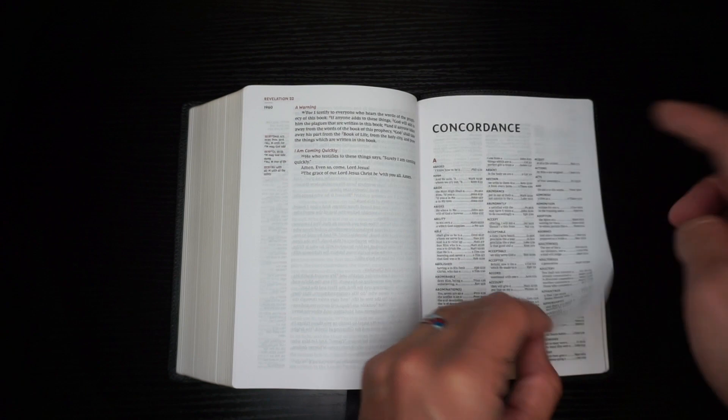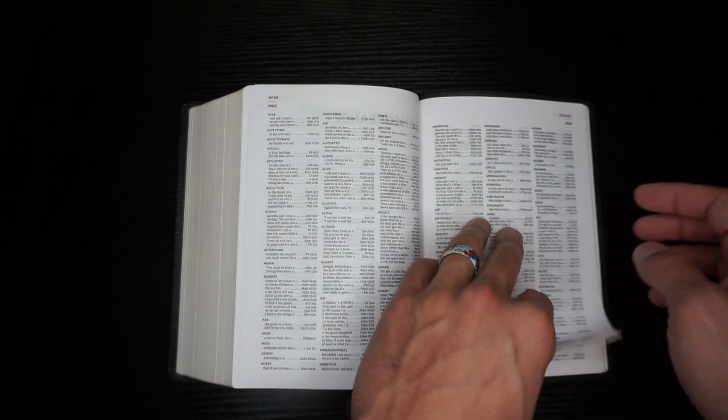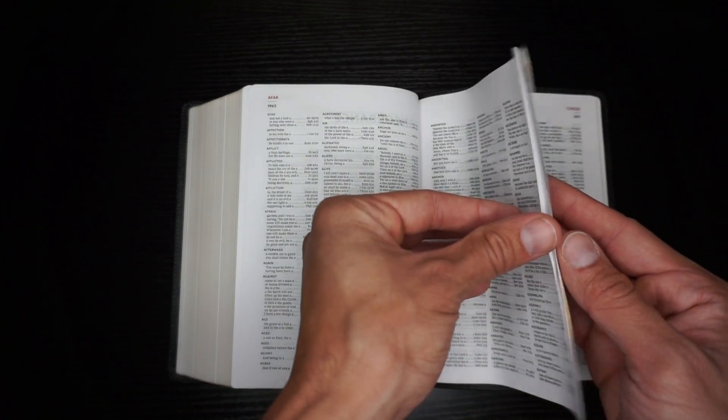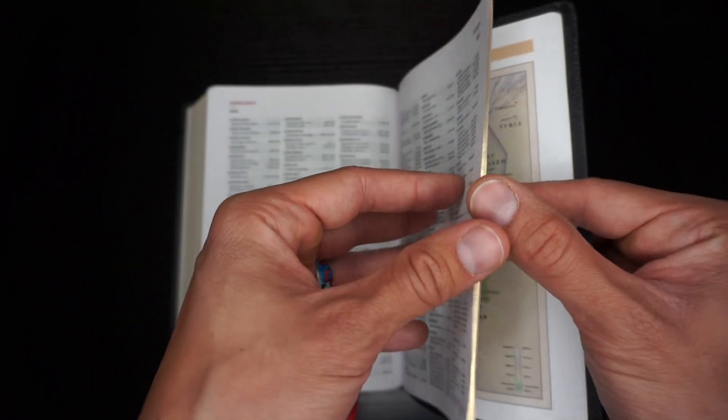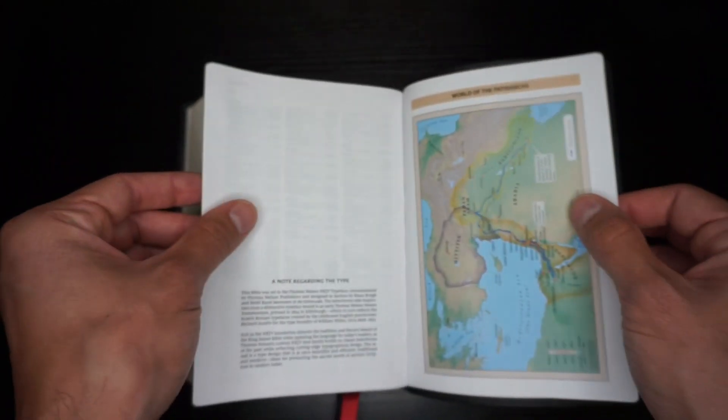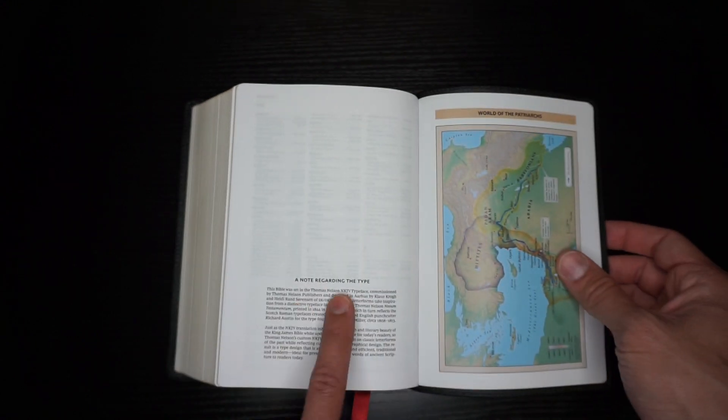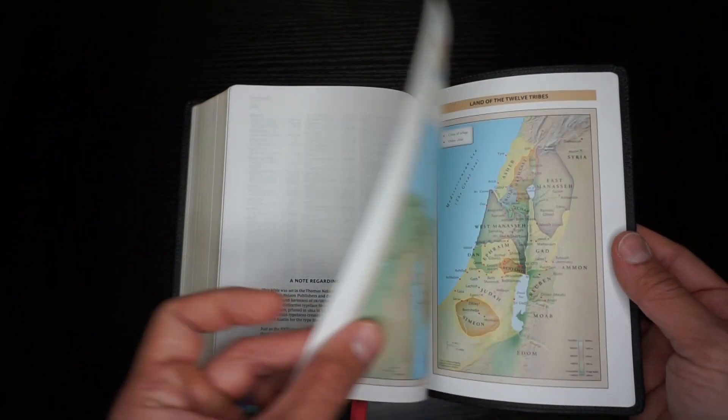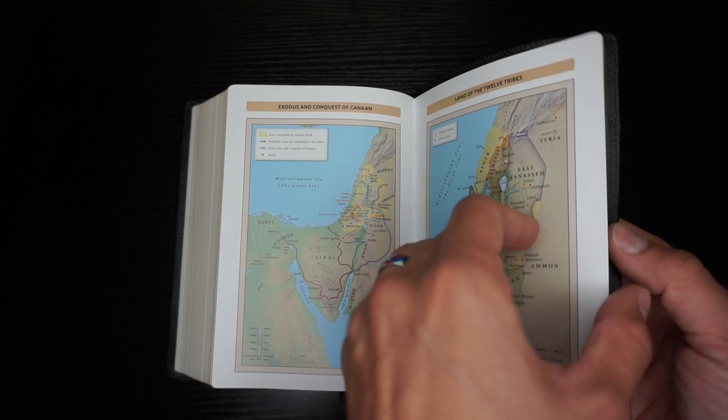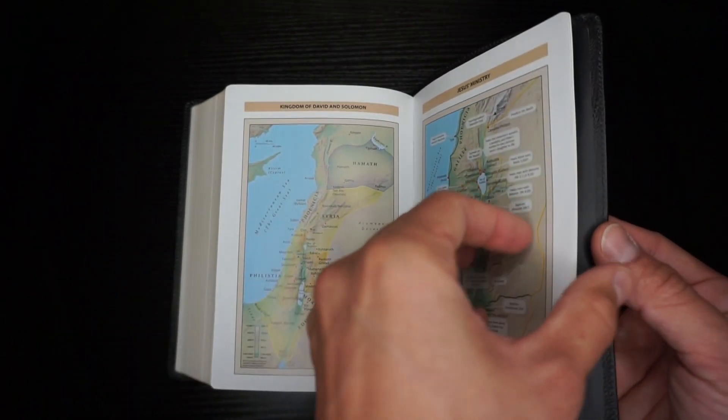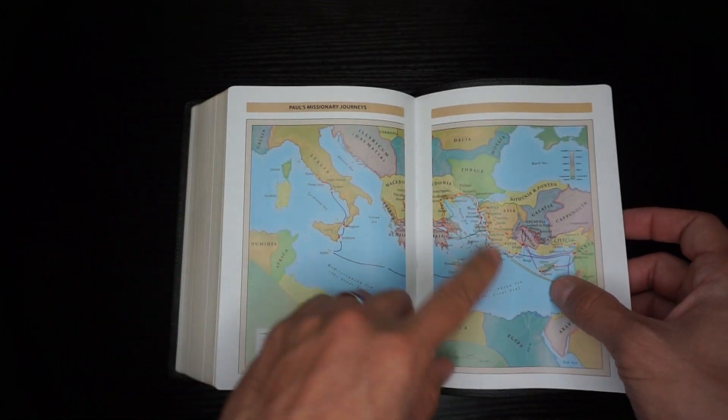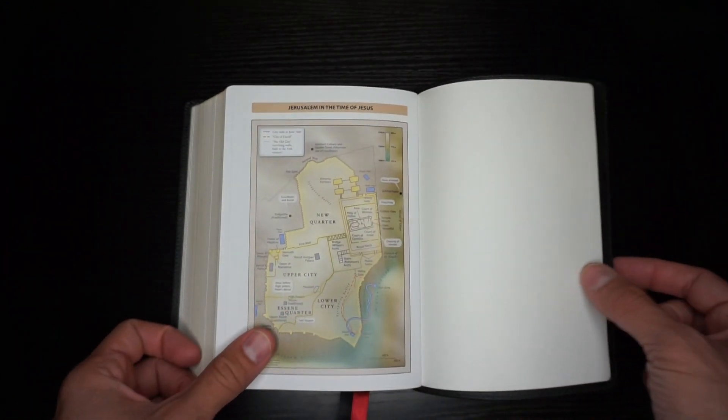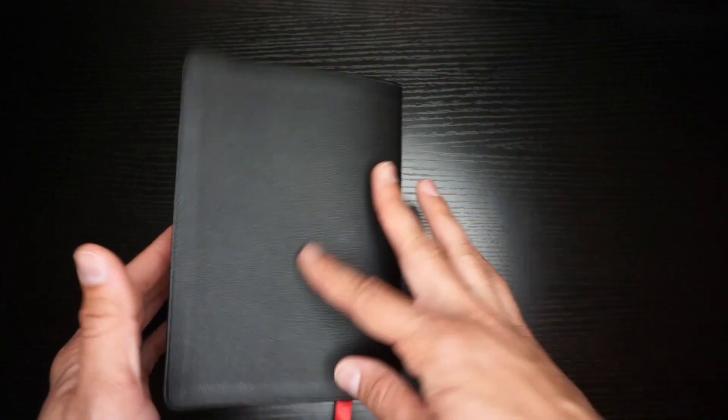Once you get to the back you're gonna have a concordance, the letters are going to be in red but the words are all black and bold, three column concordance. After that it's gonna go straight to, peak of the maps. Here's a note regarding the type, your maps, one two three four five six, this is one, seven, there's the back.